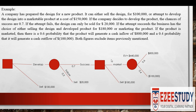Going back further, the company had two choices at this decision point: market the product or sell it. We've calculated the expected profit from marketing as $440,000. If the company sells the successfully developed product instead, it earns only $180,000. Since the company will choose the best option, it should market the product and expect to earn $440,000.